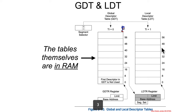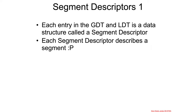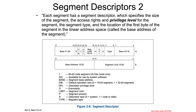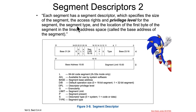We saw that the notion of GDTs and LDTs exist, so now let's dig into the data structures that are inside each of those tables. These are called segment descriptors, and each entry in the GDT and LDT is called a segment descriptor. Each segment has a segment descriptor which specifies the size of the segment, the access rights, the privilege level, the segment type, and the location of the first byte in the segment in the linear address space, called the base address.